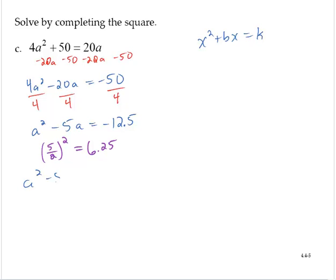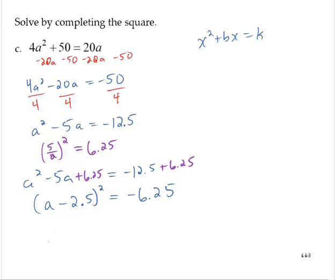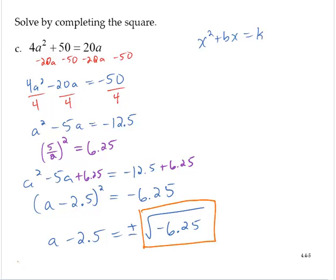I'd have a squared minus 5a — leave that space — equals negative 12.5, and I add 6.25 to both sides. The left-hand side factors as a minus 2.5 squared, and the right-hand side is negative 6.25. Applying the square root property, I would have a minus 2.5 equals positive or negative square root of negative 6.25. And we're going to stop there, because I see that I have the square root of a negative number, and so this equation has no real solutions.